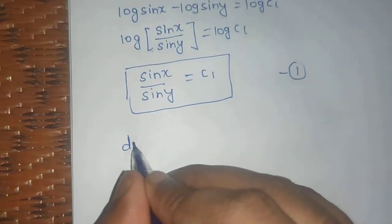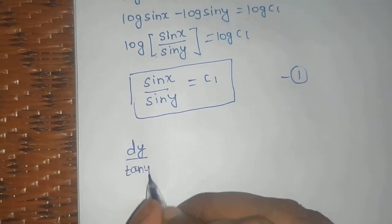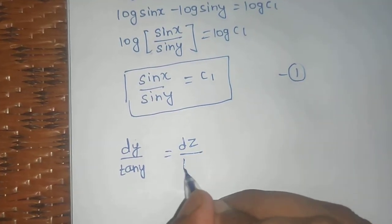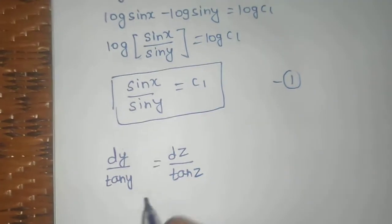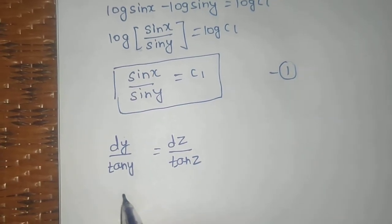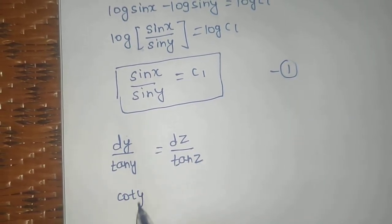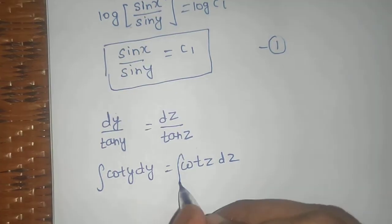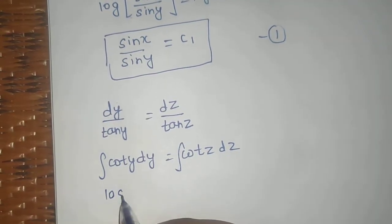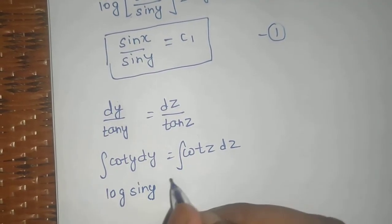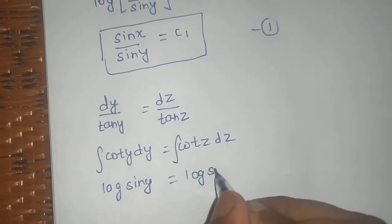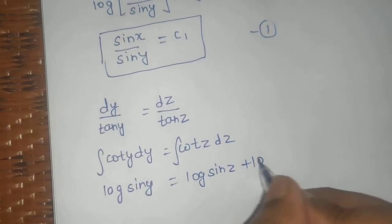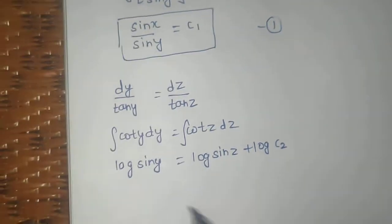For the second equation, equate the second and third. You have dy by tan y equals to dz by tan z. From here, this is cot y dy equals to cot z dz. Integrating both sides, log sin y equals to log sin z plus log of another constant, let that be c2.